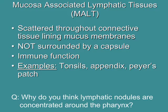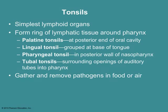All the lymphatic organs discussed so far have a capsule composed of fibrous connective tissue. The remaining organs do not have a capsule and are associated with the mucosa — a mucous membrane is any cavity in the body lined with mucus-producing cells. We call these tissues mucosa-associated lymphatic tissues, or MALT. These MALT tissues are scattered throughout the connective tissue lining of mucous membranes — they are not surrounded by a connective tissue capsule, but they do have an important immune function. Examples of MALT include the tonsils, the appendix, and the Peyer's patches. Why do we have lymphatic nodules associated with cavities of the body such as the pharynx and intestine? We'll discuss that shortly.